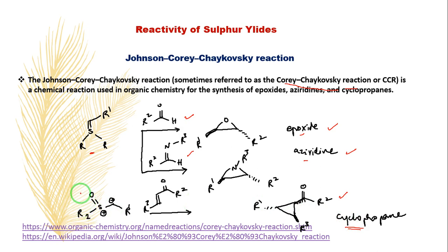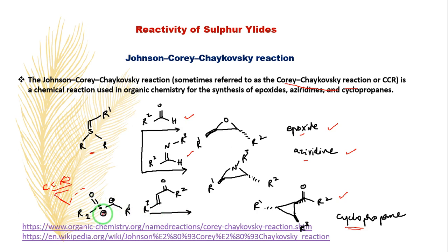In this reaction, the sulfonium ylide is generally referred to as the Corey–Chaykovsky reagent. The reaction is also called the Corey–Chaykovsky reaction, where dimethyl or dialkyl oxosulfonium ylide treated with an alpha,beta-unsaturated carbonyl compound produces a cyclopropyl derivative.